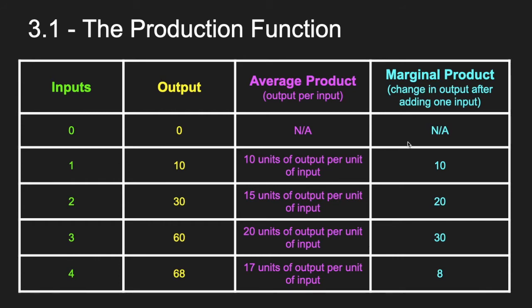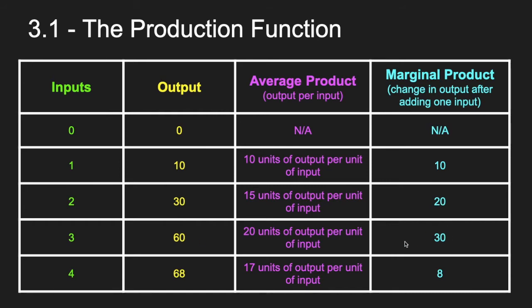With marginal product, it's just the change in output. So when we hire each new worker, how does the output change? From 0 to 1, it goes up by 10 — so the marginal product of the first unit of input is 10. When we get the second input, it goes from 10 to 30, so the change is 20. The third input, it goes from 30 to 60, so the change is 30. With the fourth input, it goes from 60 to 68, so our marginal product is only 8. That coincides with when our average product dropped as well — that's an important relationship.